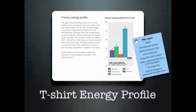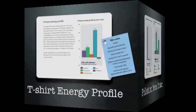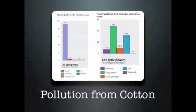Another study from the UK in 2006 showed essentially the same picture. 60% of the life cycle energy is consumed in the use phase of a cotton t-shirt that is washed at 140 degrees Fahrenheit, tumble dried, and ironed.